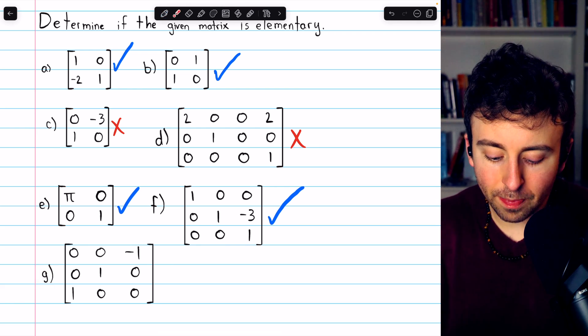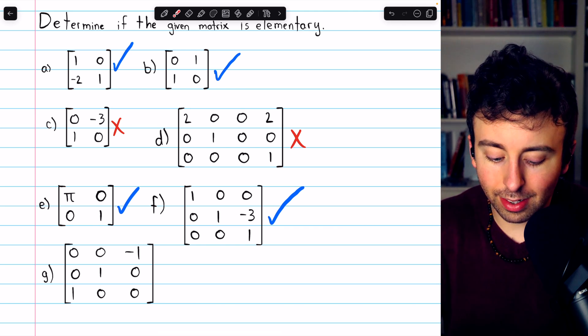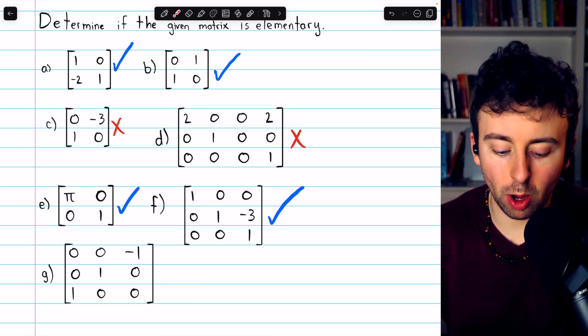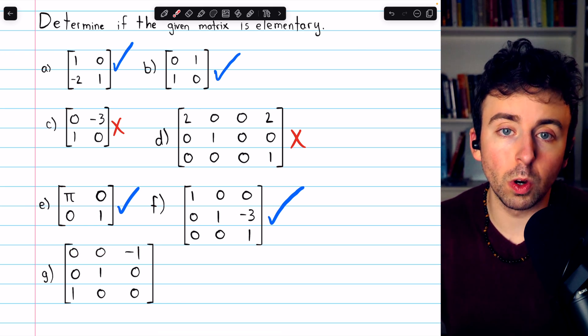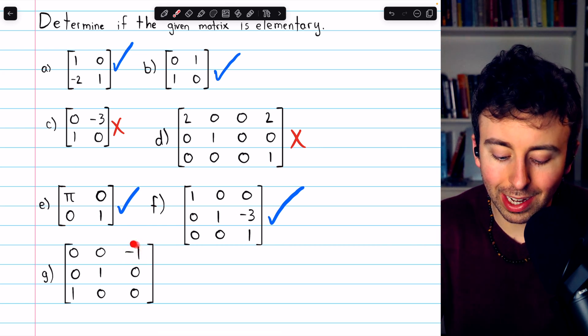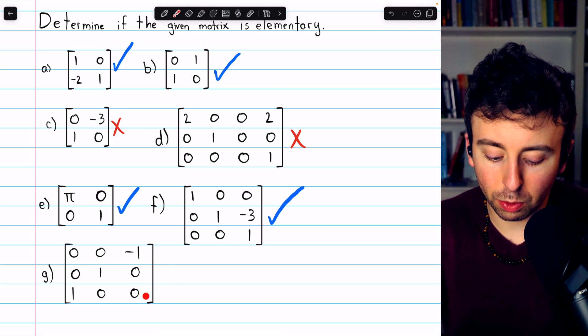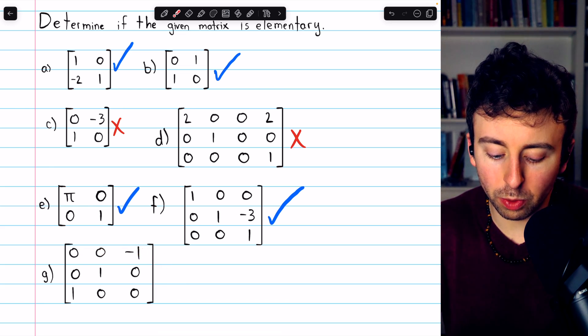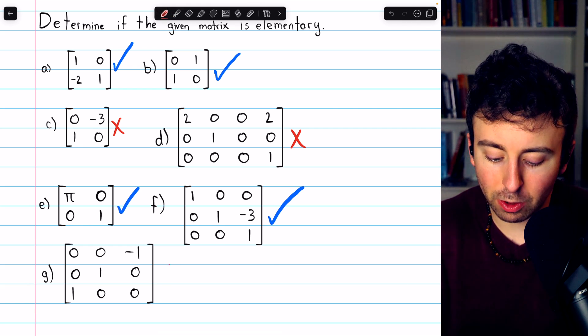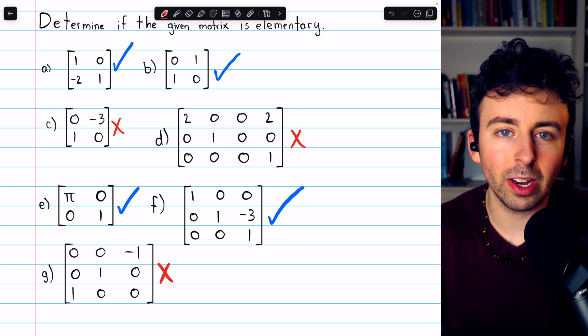Finally, matrix G. This one is not elementary. We can see that rows 1 and 3 must have been swapped, but also row 1, the new row 1, was multiplied by negative 1. Because we don't have positive 1 here, we have negative 1. So two row operations must have taken place. The rows were swapped, and then this first row was multiplied by negative 1. Thus, this is not an elementary matrix, because it cannot be obtained from the identity by performing a single row operation.